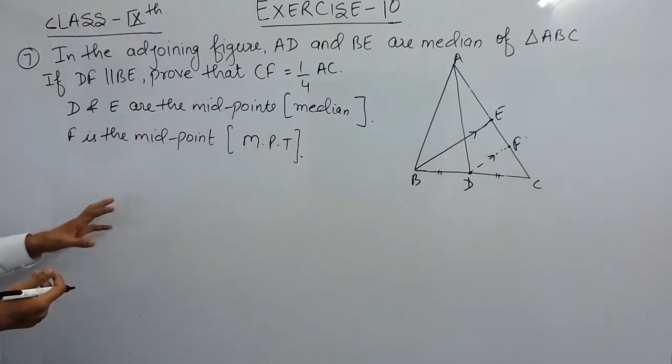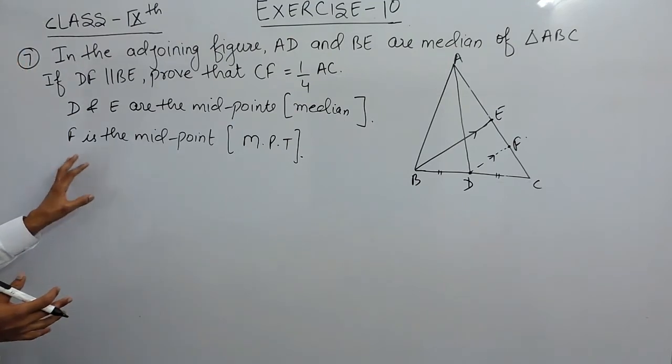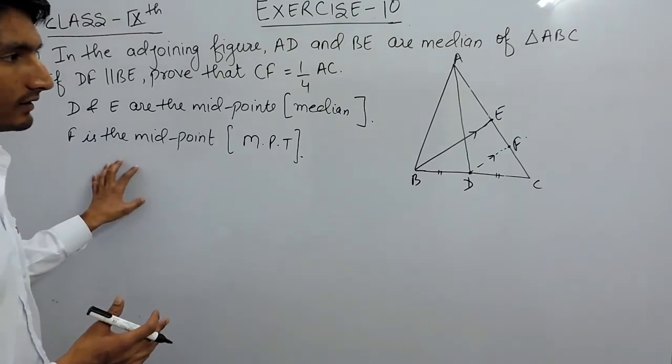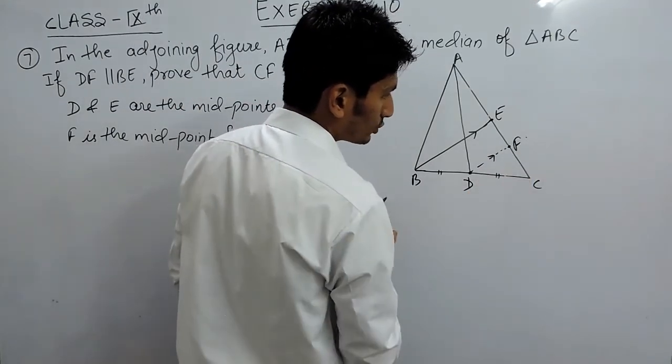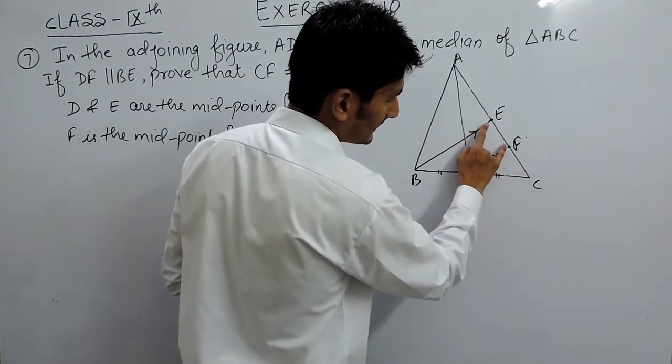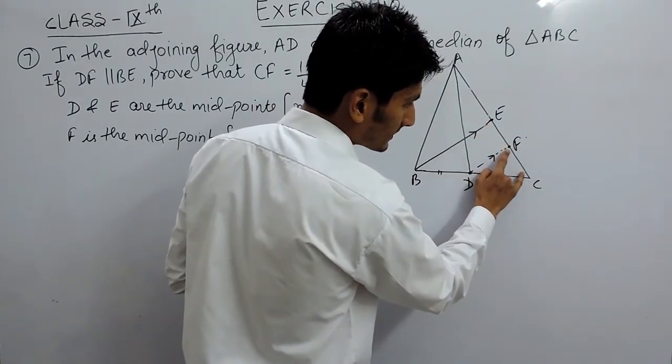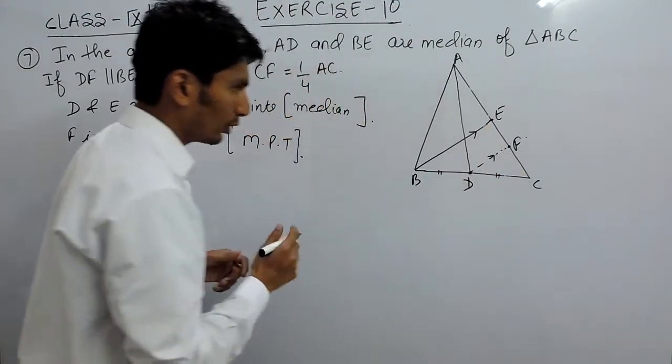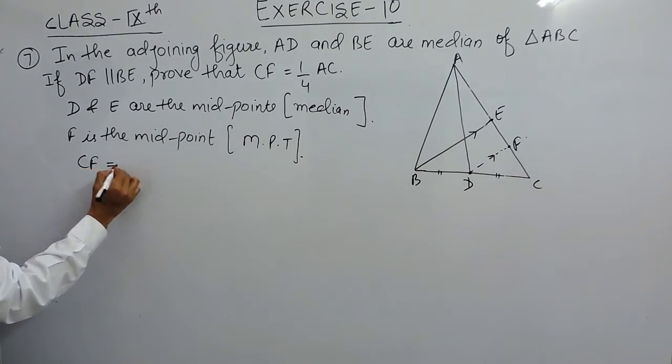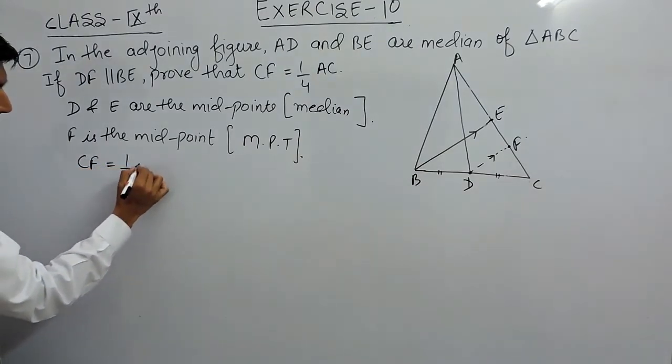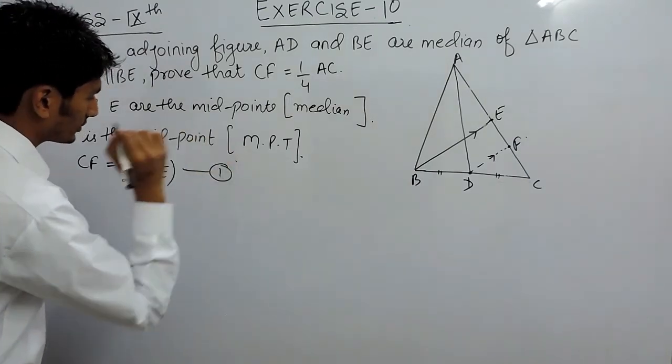You can write the theorem as well, but I am writing it in a short way. Now, if this is the midpoint, so clearly this part and this part should be equal. So this can be written as half of this. So CF can be written as half of CE. This is our first equation.